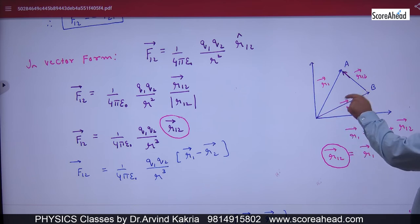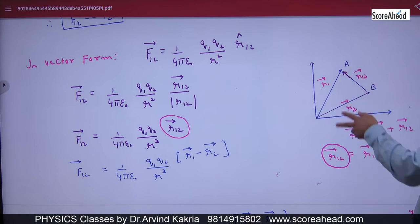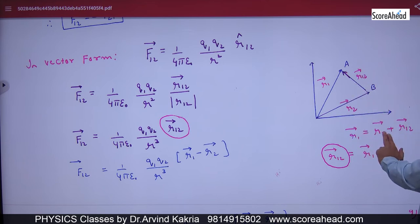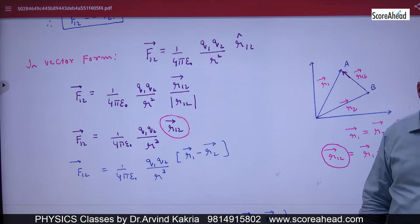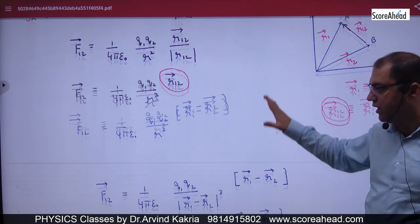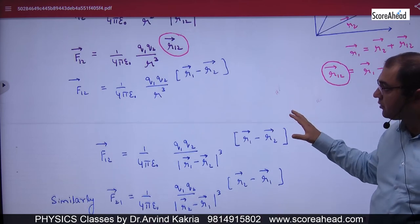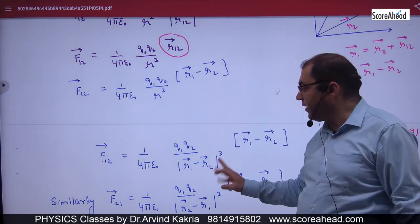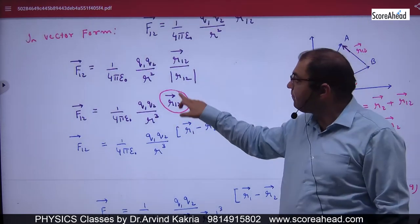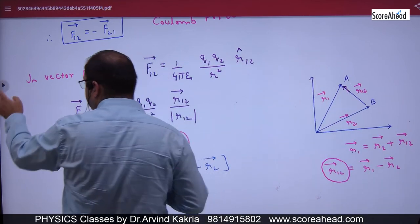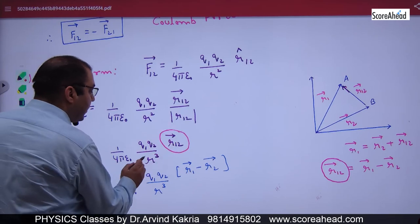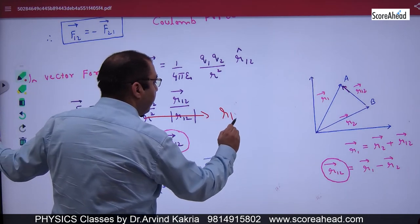Using the triangle law, if two sides are continuous and the third is the closing side, then R1 vector equals R2 vector plus R12 vector. So R12 vector equals R1 vector minus R2 vector. Therefore, F12 vector can be written with R1 vector minus R2 vector in the numerator and R12 cubed in the denominator, multiplied by R12 vector.